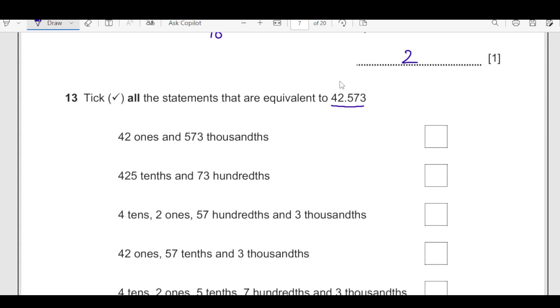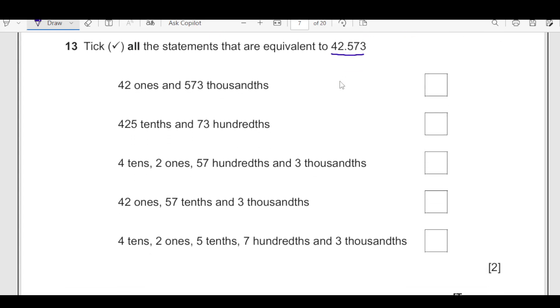Number 13, tick all the statements that are equivalent to 42.573. You have to be very careful writing this, not doing any mistake. This is 42 ones plus it will be 0.573. This will come out to be this one which is equivalent to 42.573. This is 425 tenths. 425 tenths means over 10 then plus 73 hundreds, 73 divided by 100. This is not going to come to that one. 4 tenths is 40, 2 ones is 42 and 57 over 100 is 5.7 and 3 over 1000.